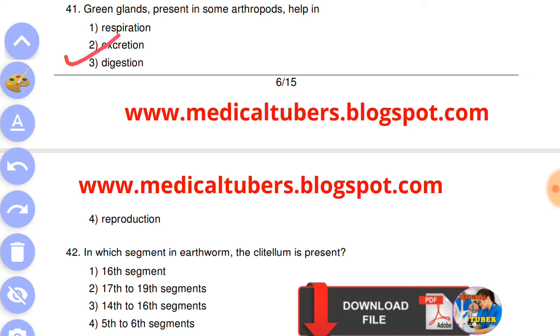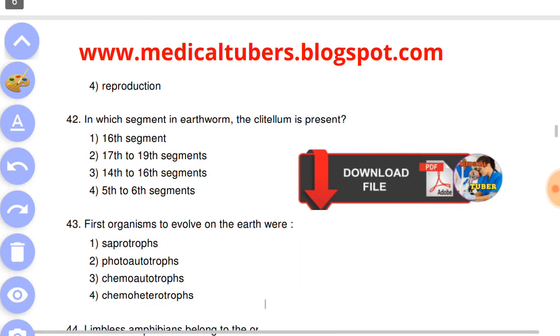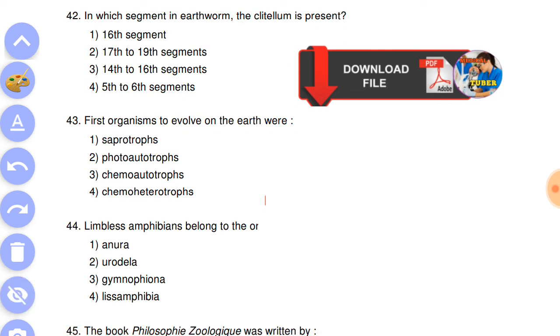Question number 42: in which segments in the earthworm is the clitellum present? Answer is the third, 14 to 16 segments.